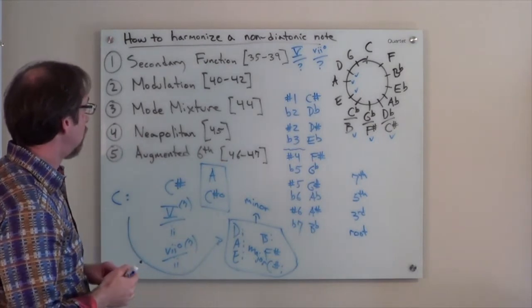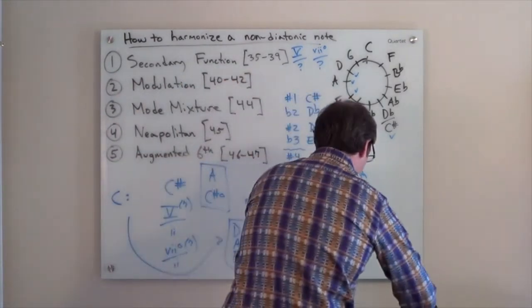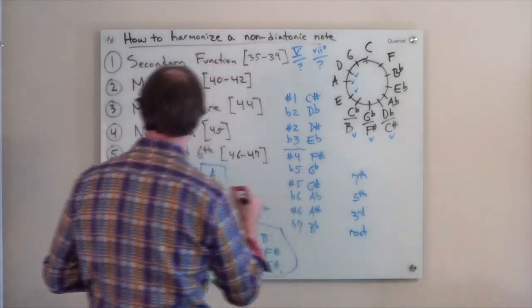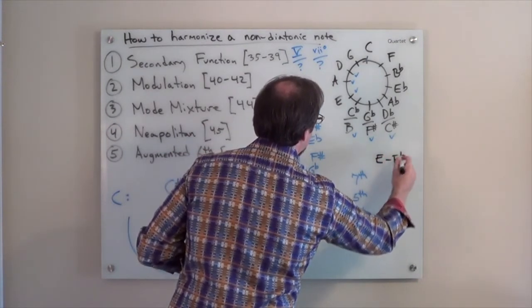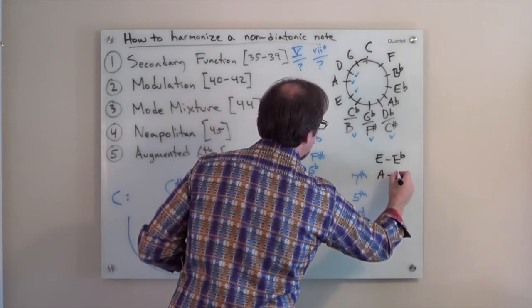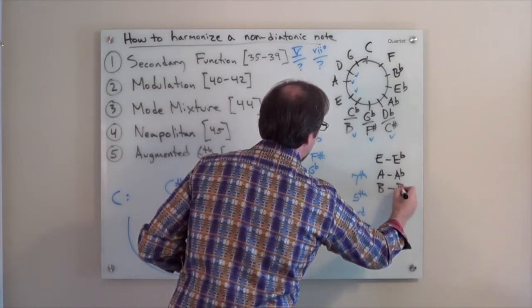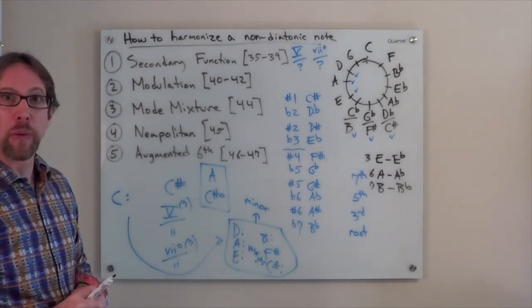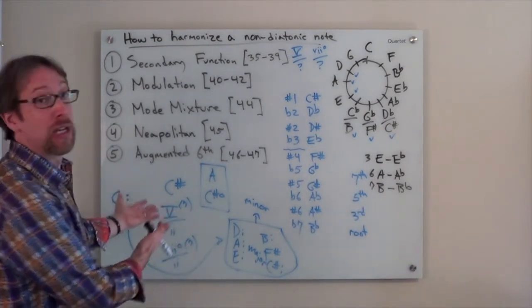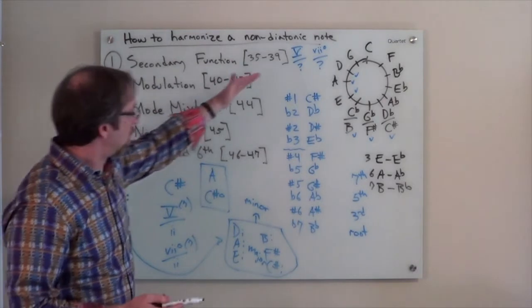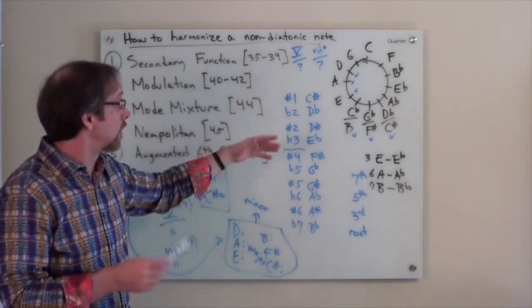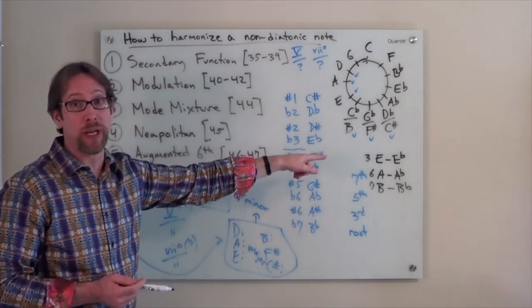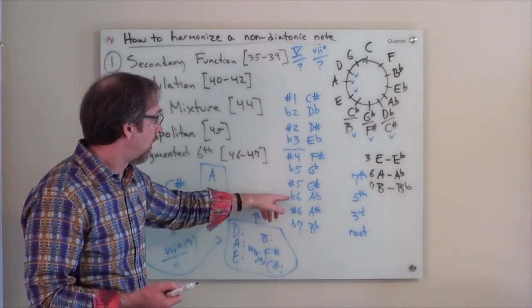What about mode mixture? Well, in mode mixture, what we have is kind of a use of parallel minor. And the notes that are different in the parallel minor is that E turns into E flat, A turns into A flat, and B turns into B flat. So scale degrees 3, 6, and 7. Well, you'll notice that none of those notes that we get from using the parallel minor is the note C sharp. That said, when you get to flat 3, you say, oh, look, I could totally use mode mixture to harmonize an E flat, a flat 3 in the key, or an A flat, or a B flat.